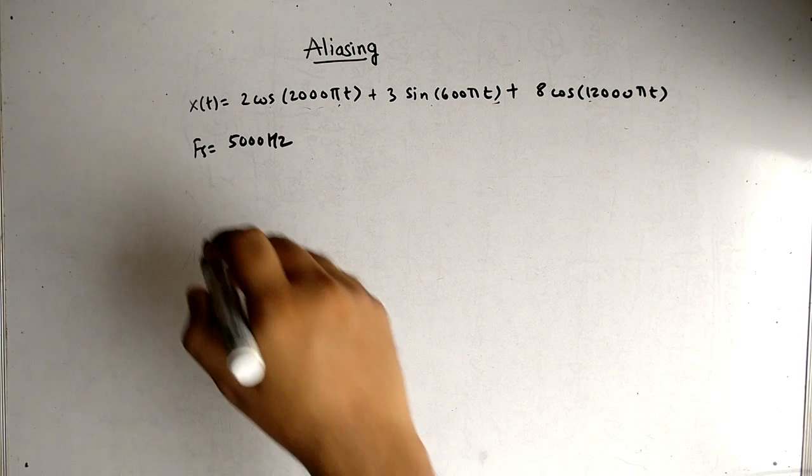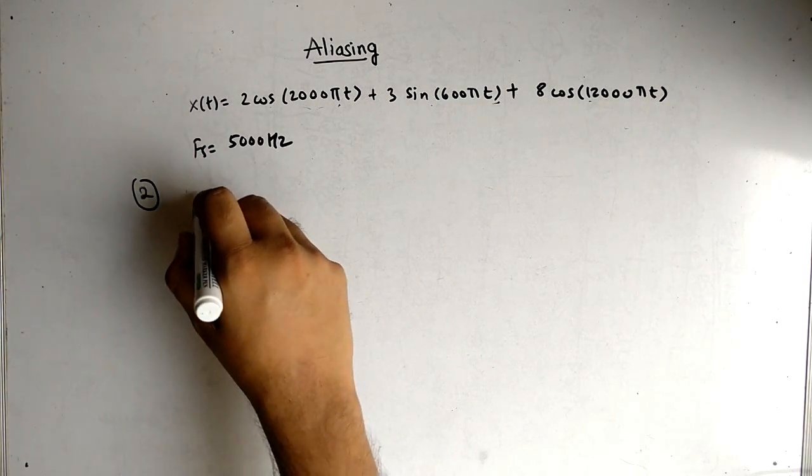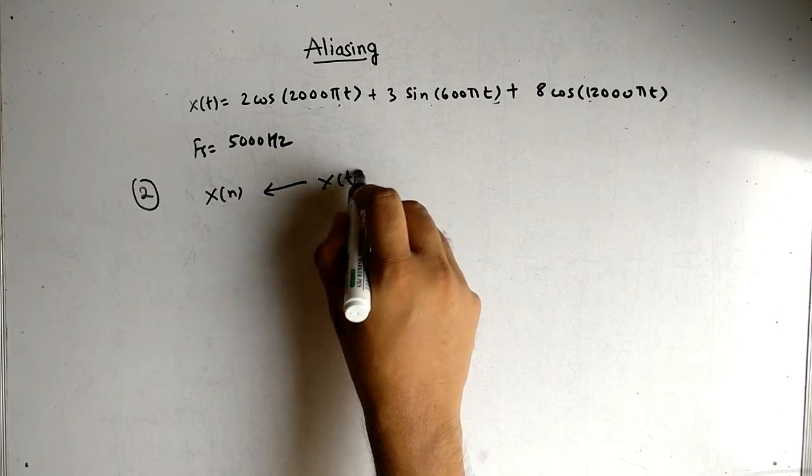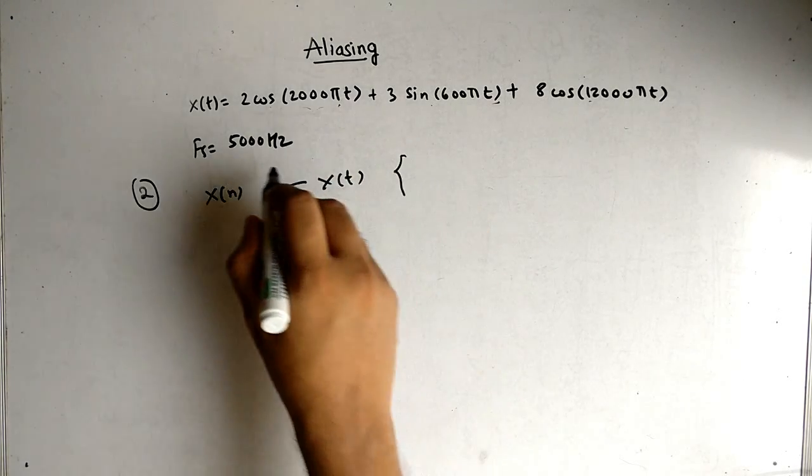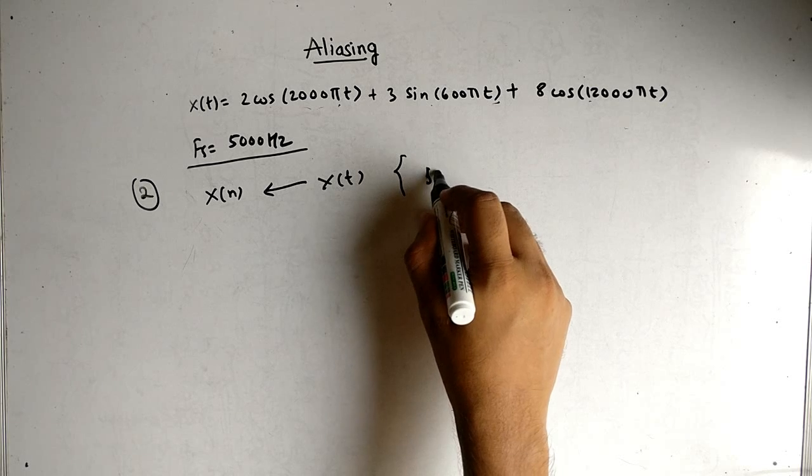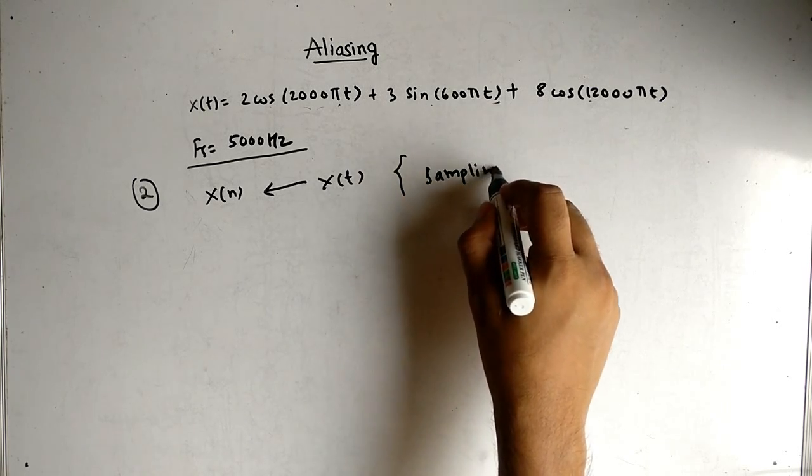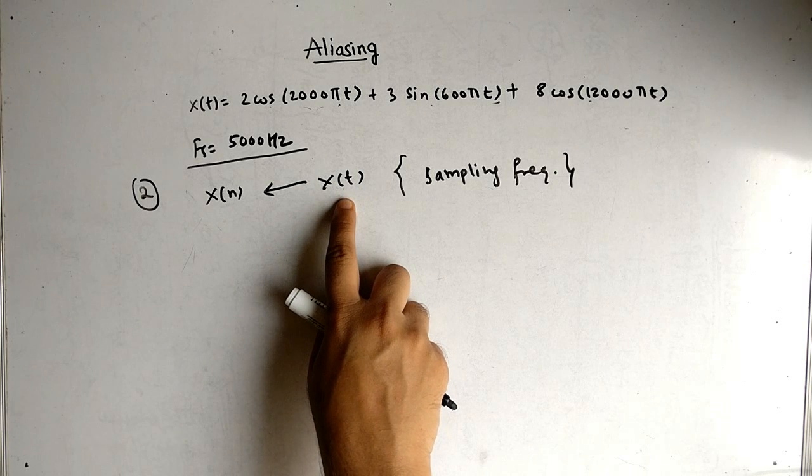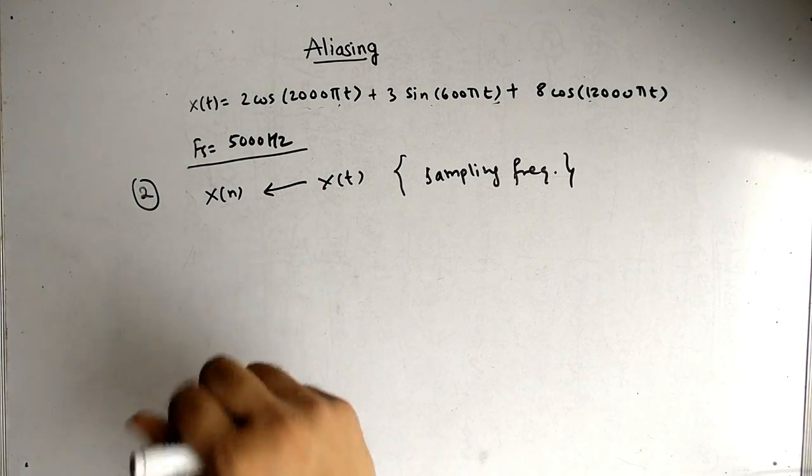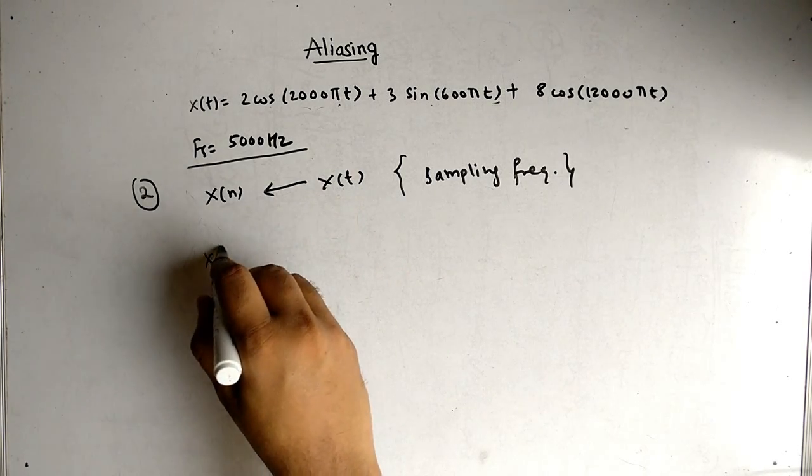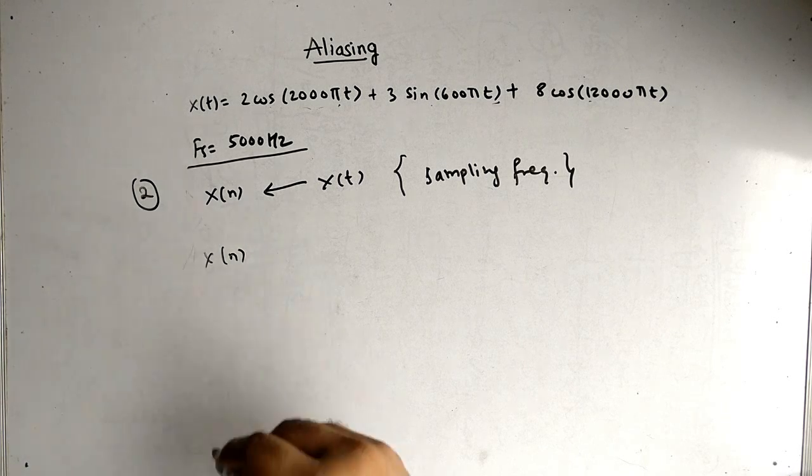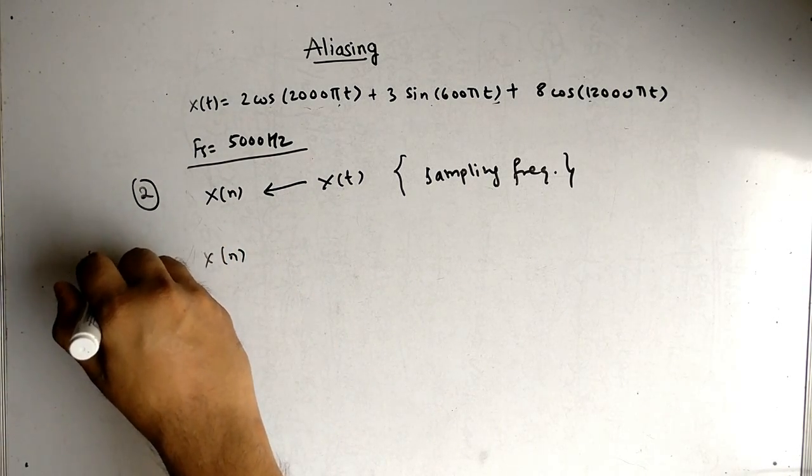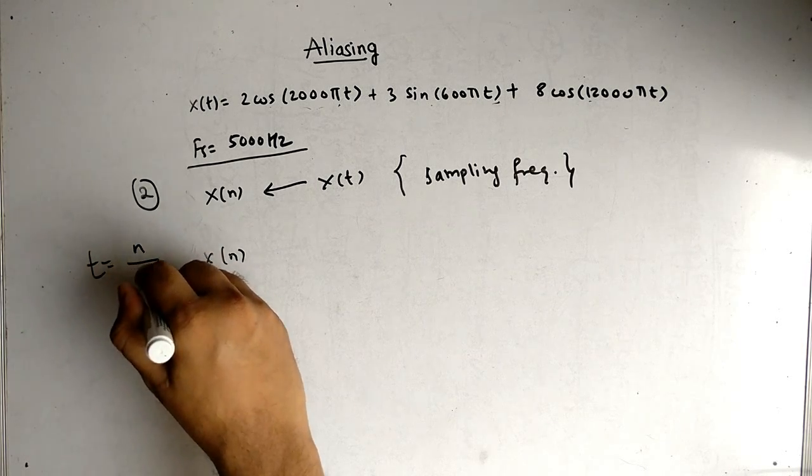My second question is: we have to find the discrete signal x(n) from the given signal x(t). The question has the sampling frequency, so using the sampling frequency we have to convert x(t) into x(n). To convert, you have to substitute t is equal to n by fs.